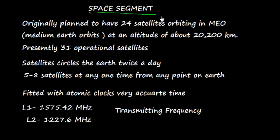Now let's discuss the space segment. Originally it was planned to have 24 satellites orbiting in MEO, which means medium Earth orbits, at an altitude of about 20,200 kilometers. The United States is committed to maintaining the availability of at least 24 operational satellites 95% of the time. To ensure this, the U.S. Air Force has been flying about 31 operational satellites in the past few years and the number of satellites keeps changing.